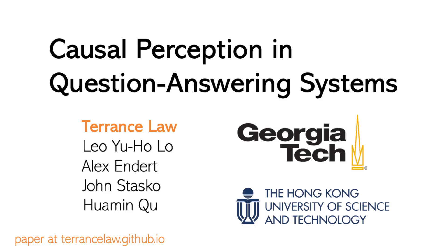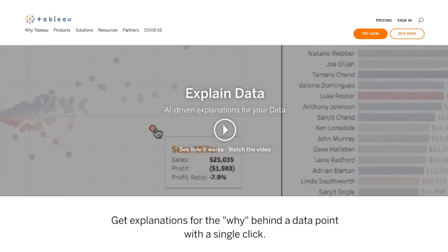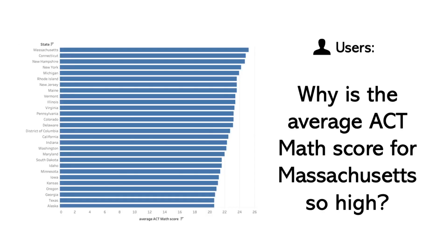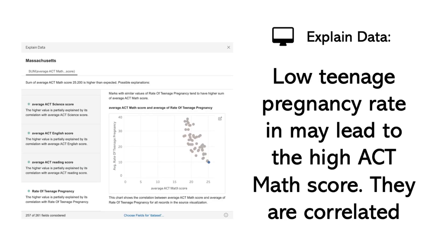You can find the PDF of our paper on my website, terencelaw.github.io. Here is Tableau Explained Data. With Explained Data, users can ask why there is an extreme observation in their data, and Explained Data will conduct causal inference and provide potential explanations for the extreme data observation.